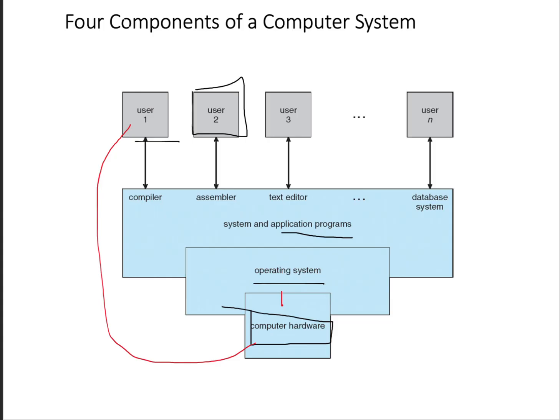The OS serves as the base for application programs, helping them run on the hardware. It also serves as an intermediary between the user and the computer hardware, acting as an interface. So now we don't have to write machine code — the OS is doing all these things for us, and it is crucial in the computer system.